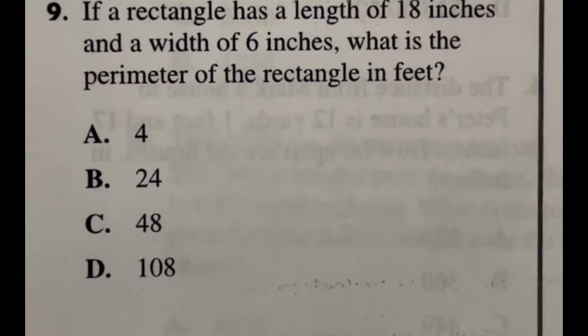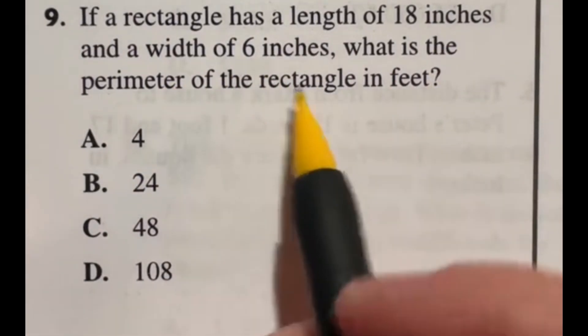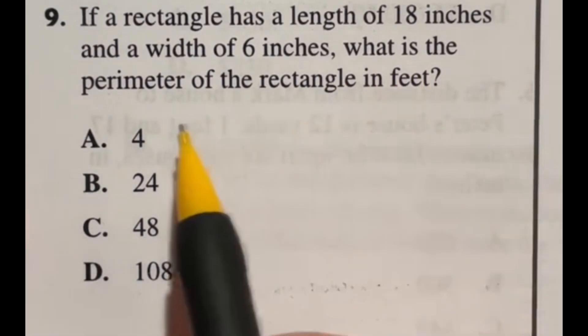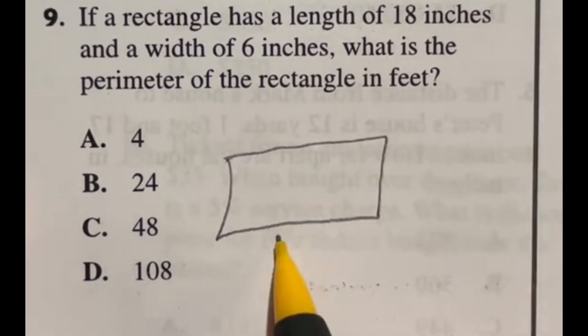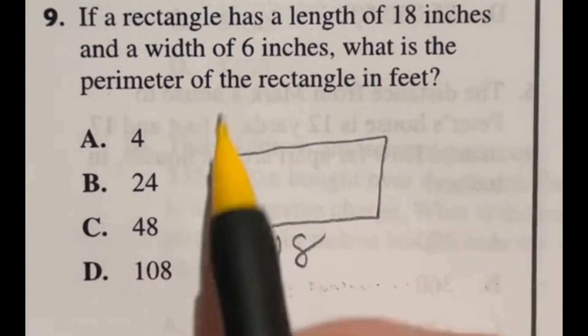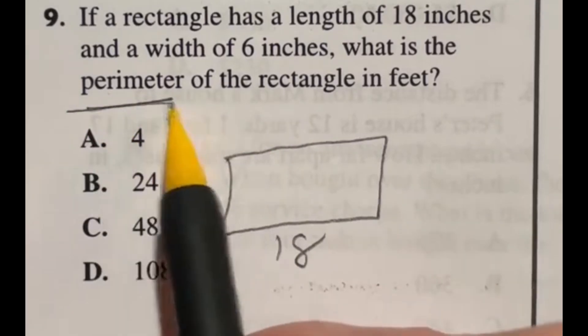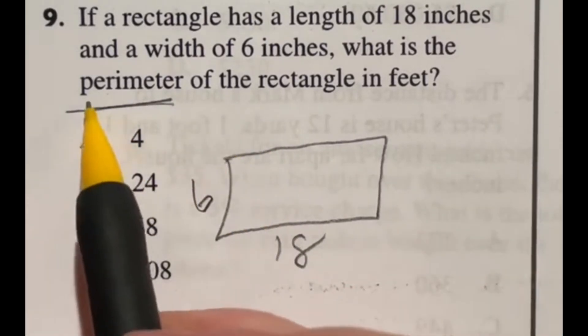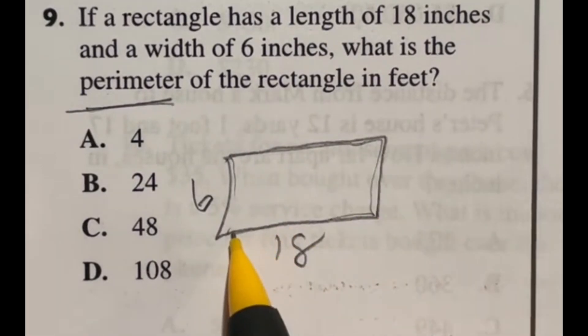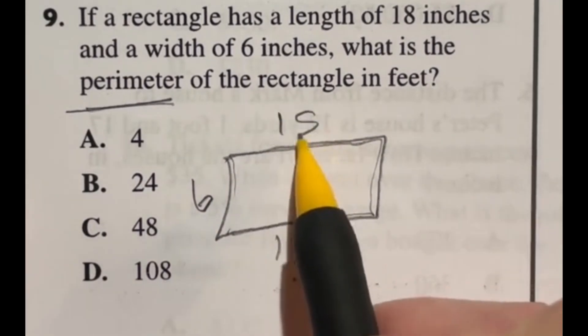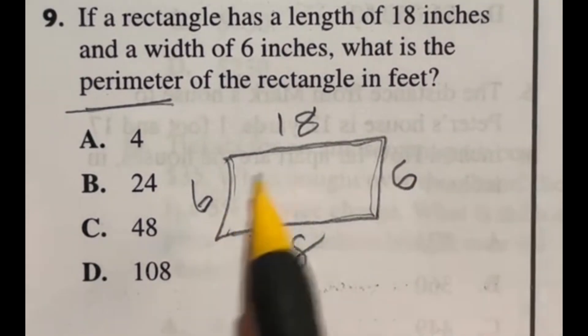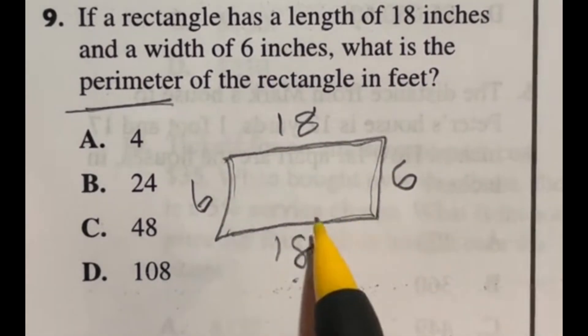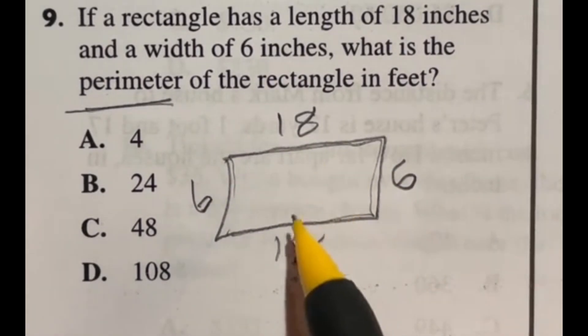For number 9 it says if a rectangle has the length of 18 inches and a width of 6 inches what is the perimeter of the rectangle in feet? So if I'm drawing a rectangle here it says a length of 18 a width of 6 and it's asking for perimeter. So if you forgot what is the perimeter the perimeter is how far all the way around the outside it is. Now remember it's a rectangle so if this guy right here is 18 then this guy up here is going to be 18 as well. If this is 6 then this is going to be 6 as well. So when we're going through here we're actually just adding all of these up so let's go ahead and go through and remember we don't have a calculator so you will have to do this by hand.